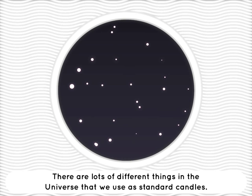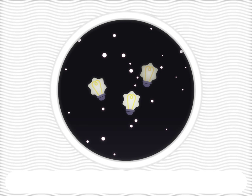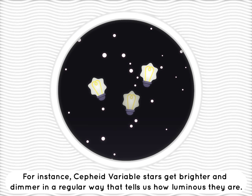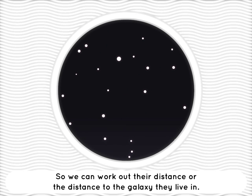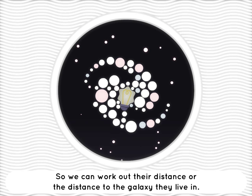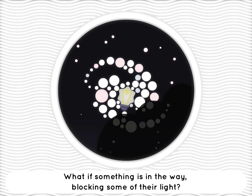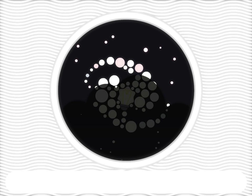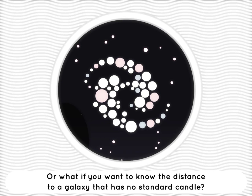There are lots of different things in the universe that we use as standard candles. For instance, Cepheid variable stars get brighter and dimmer in a regular way that tells us how luminous they are, so we can work out their distance, or the distance to a galaxy that they live in. But there are limits to using standard candles — what if something's in the way blocking some of their light, or what if you want to know the distance to a galaxy that has no standard candle?